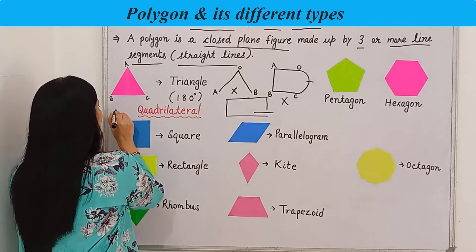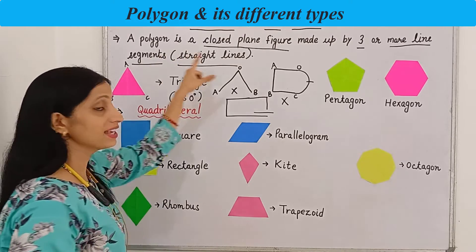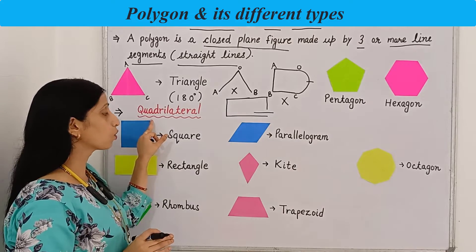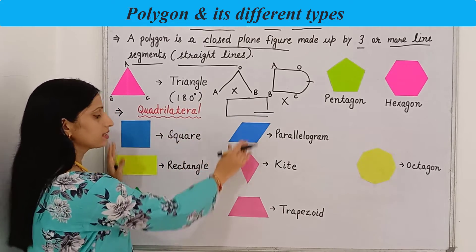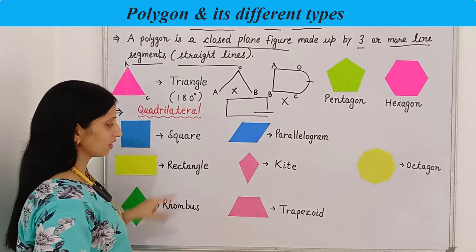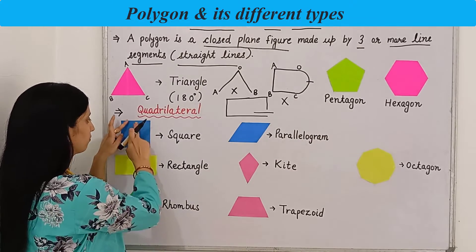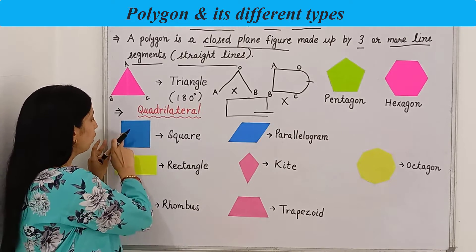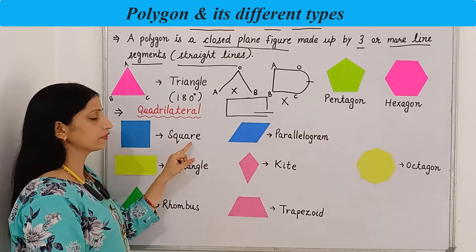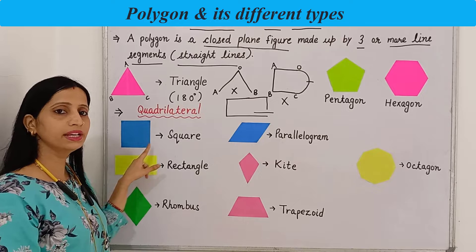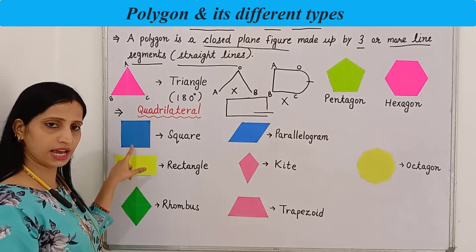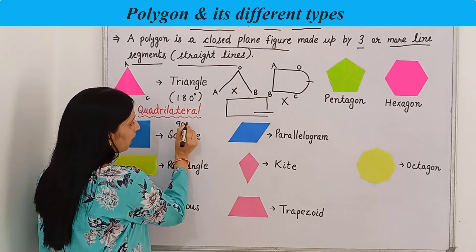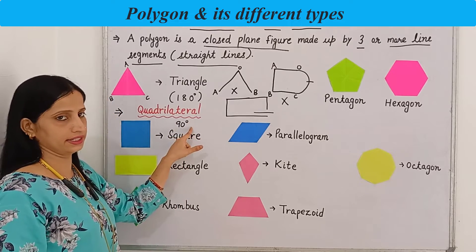A polygon which has four sides is known as a quadrilateral. Quadrilaterals are of different types. The first one is a square — it is made up by four line segments and all the line segments are equal. In the case of a square, all the sides will be equal in length. It has four sides, four corners, and each angle of a square will be of 90 degrees.